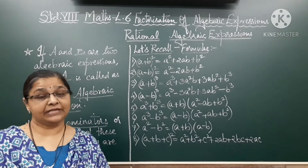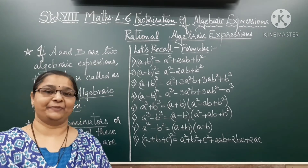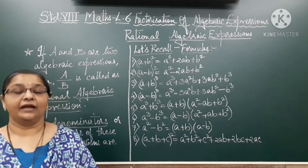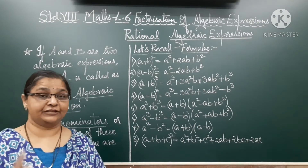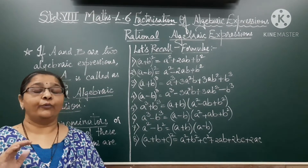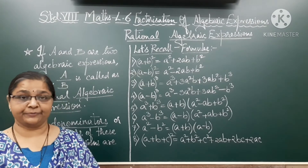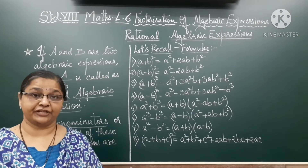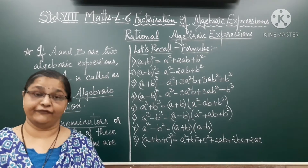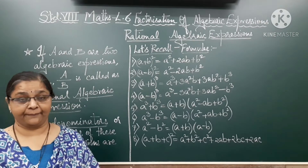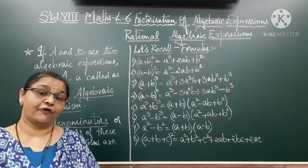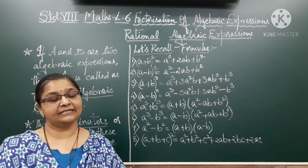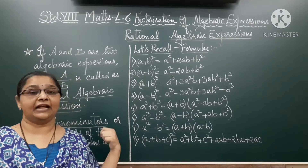Let us now see what is a Rational Algebraic Expression. If A and B are two Algebraic Expressions, then A upon B is called a Rational Algebraic Expression. When we simplify these Rational Algebraic Expressions, we perform various operations like addition, subtraction, multiplication and division, just as we do with Rational Numbers.